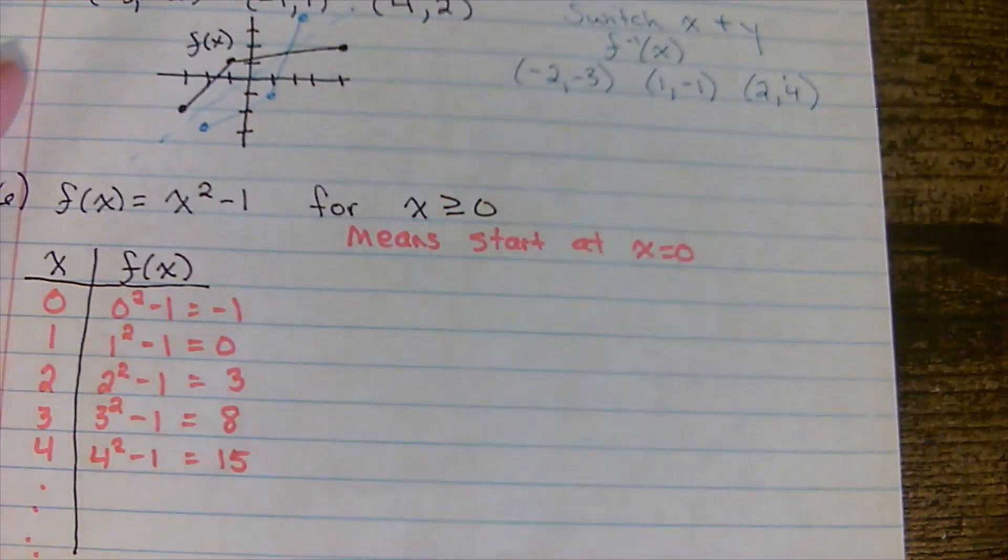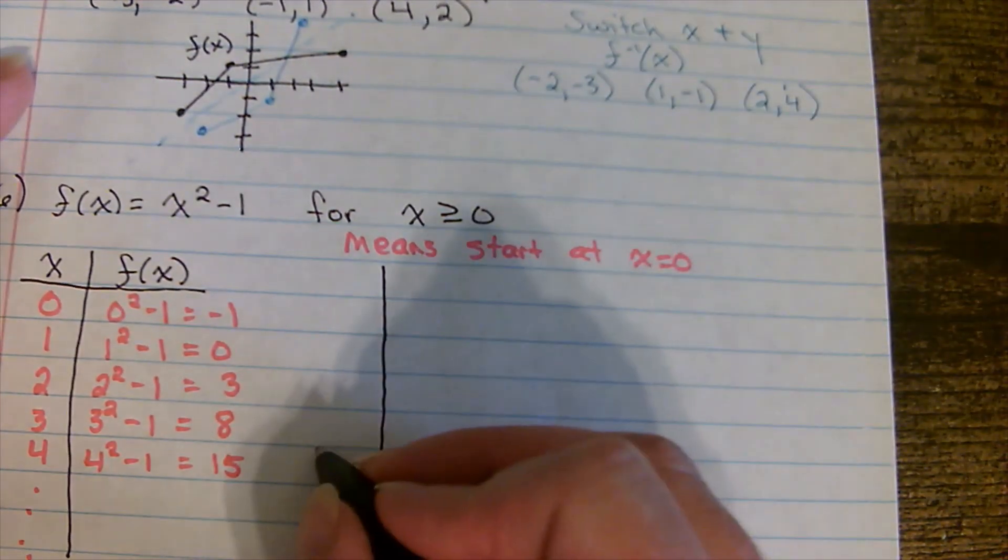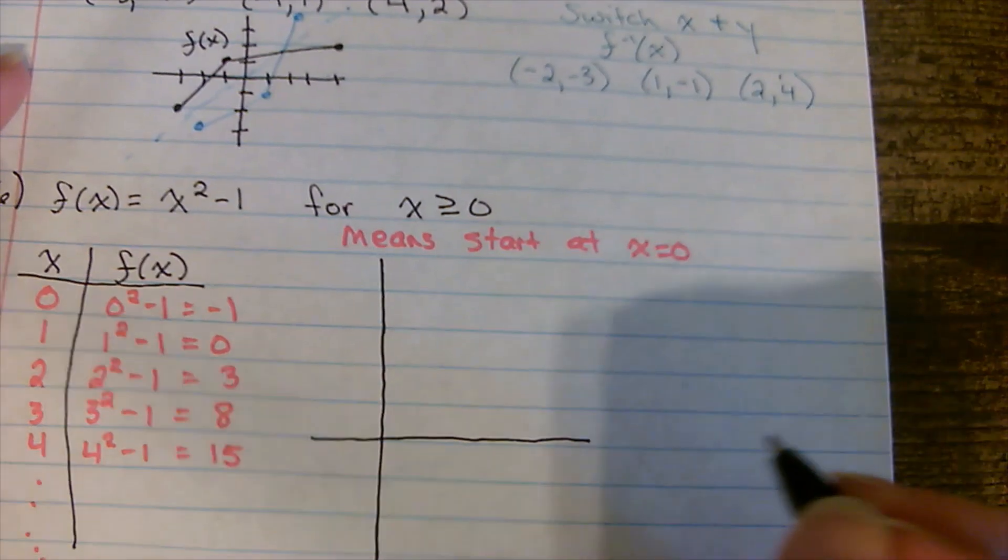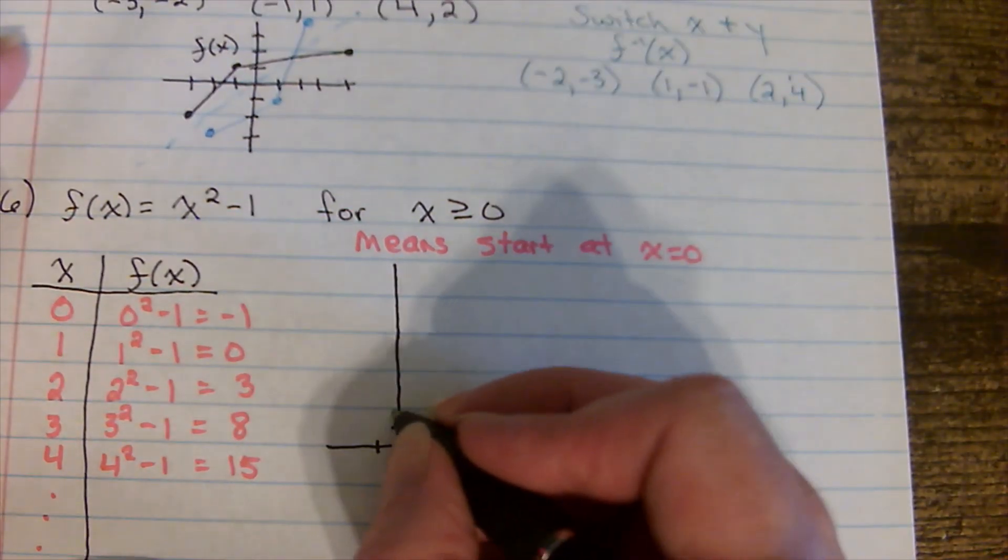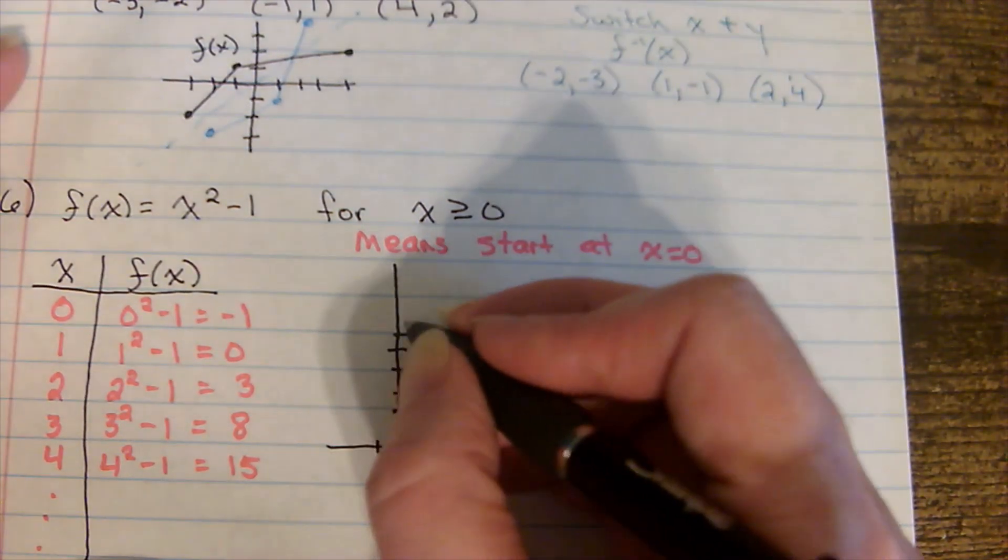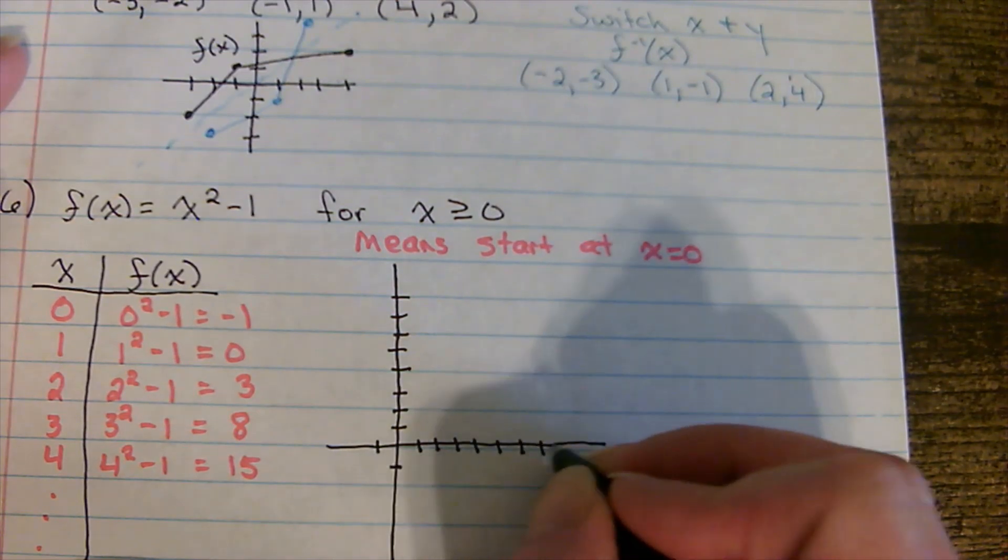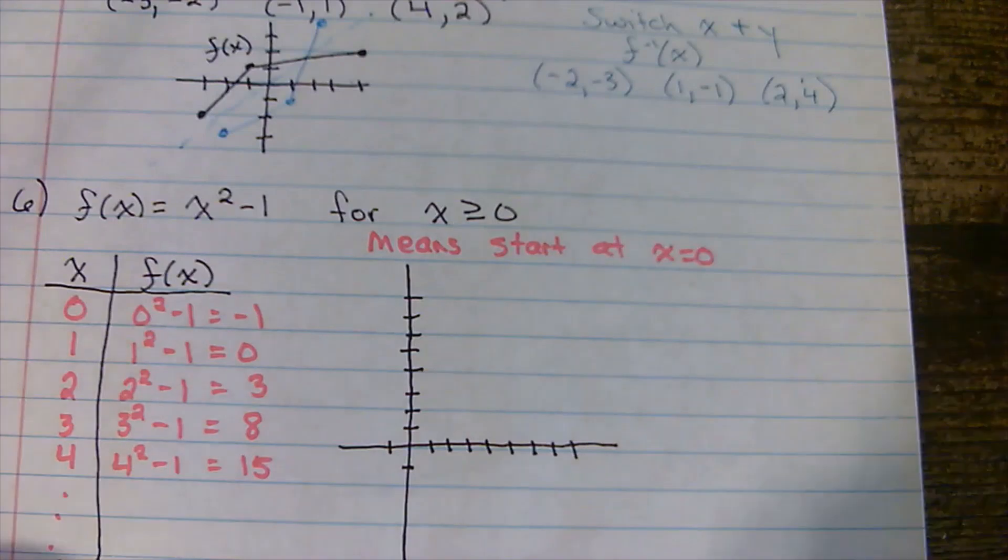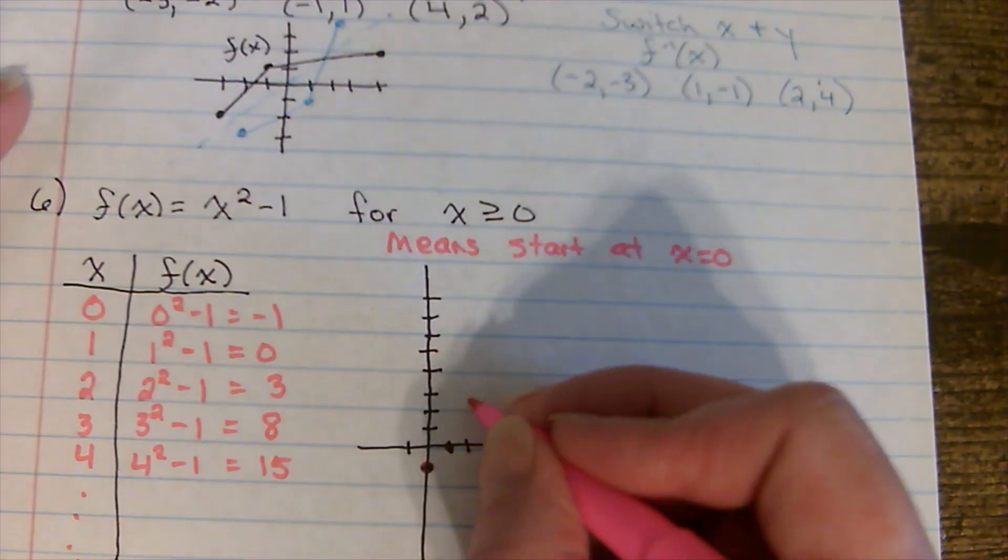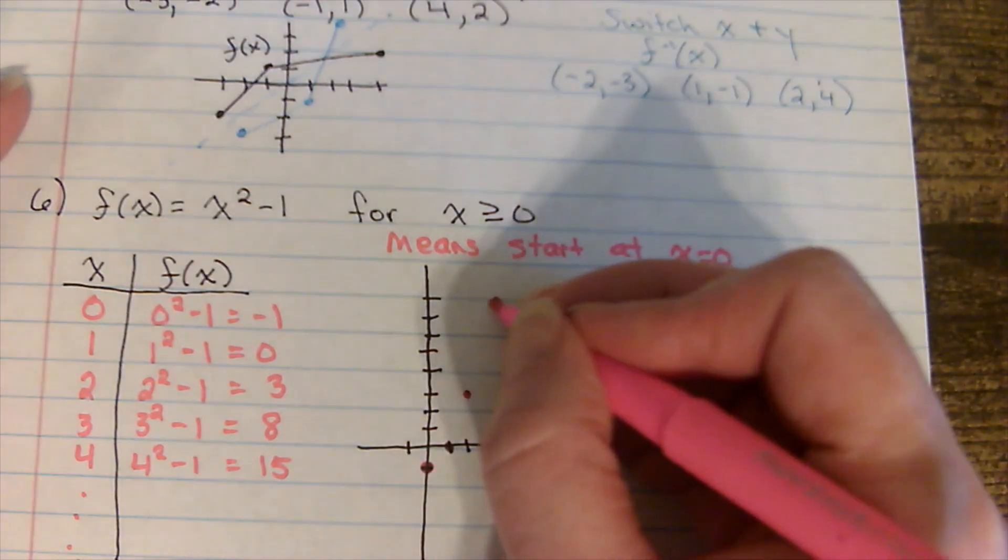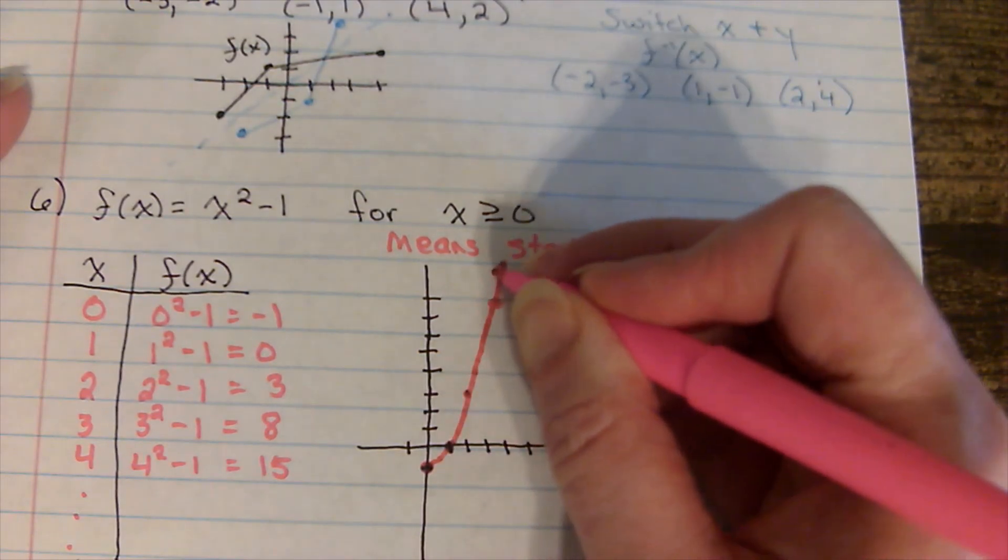So here's my function. And what it really is, it's just half of a parabola. I'll do this one in pink. So 0, negative 1. 1, 0. 2, 3. 3 goes all the way to 8, and that's about all I can graph. And it would keep going and going and going and going.